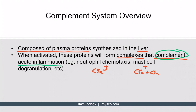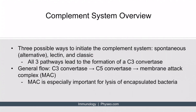What you need to know about the complement system largely revolves around the parts that intersect with pathology — in other words, if one part of the complement system goes wrong or is deficient, how will that impact a patient clinically? There are three possible ways to initiate the complement system: the spontaneous pathway, also called the alternative pathway; the lectin pathway; and the classic pathway. All three pathways lead to the formation of a C3 convertase.